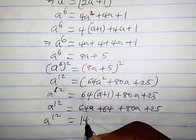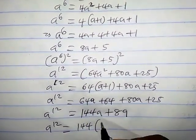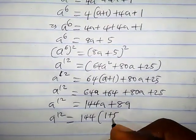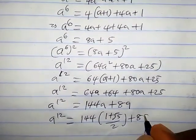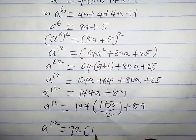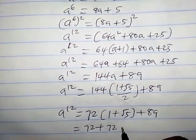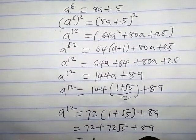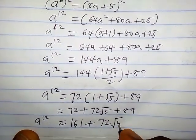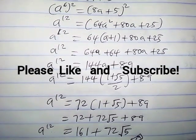Expanding gives 64 a plus 64 plus 80 a plus 25. Adding these together: a raised to the 12 equals 144 a plus 89. Substituting our original value a equals one plus square root of five over two, we get 144 times one plus square root of five over two, plus 89, which simplifies to 72 times one plus square root of five, plus 89. Therefore a raised to the 12 equals 161 plus 72 square root of five.